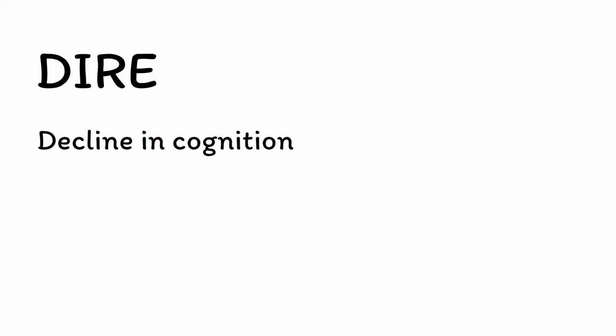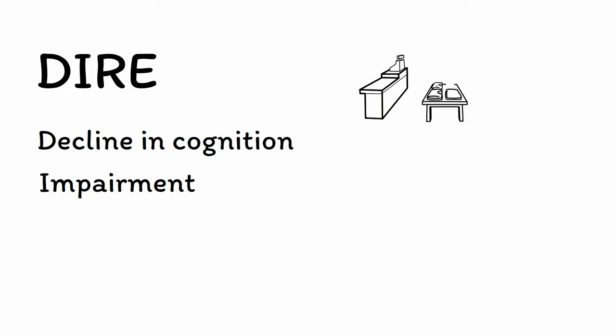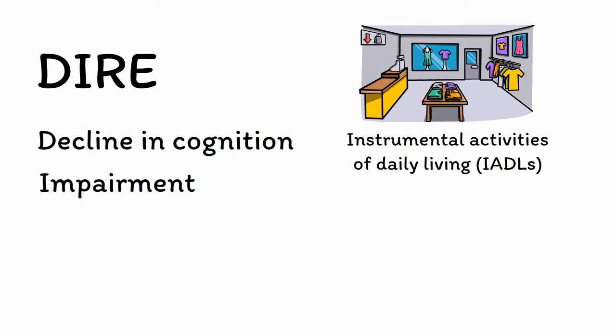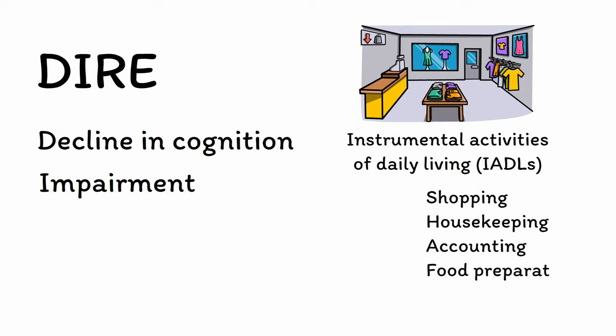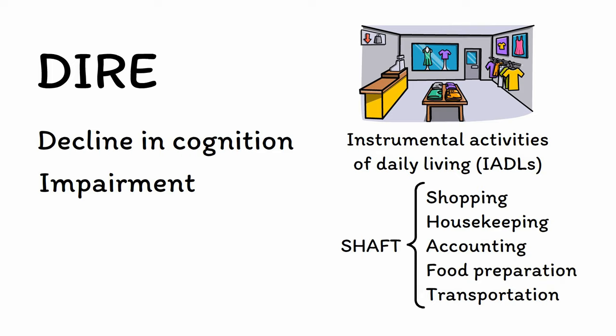Next, these cognitive deficits must be severe enough that they lead to functional impairment. In early stages of dementia, this is first noticeable when it comes to instrumental activities of daily living, or IADLs, which are more complex tasks such as shopping, housekeeping, accounting, food preparation, and transportation. You can remember these using the acronym SHAFT.